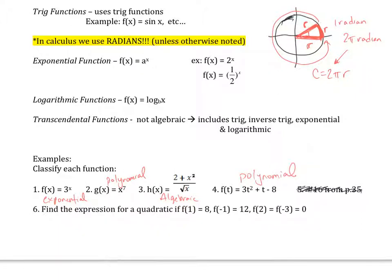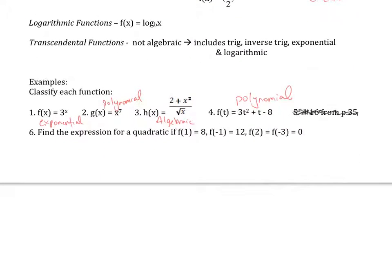All right. Find the expression for the quadratic if f of 1 equals 8, f of negative 1 equals 12, f of 2 equals f of negative 3, which equals 0. Okay, so we could tackle this a couple different ways. One way that I just heard right now from someone was, since these two, we know it's a quadratic, right here, tells us it's a quadratic. And we know f of 2 equals f of negative 3, which equals 0. So if I look at this graphically, when I put in 2 or negative 3, I get a 0 out of that. So we know that we could say y equals a times x minus 2, x plus 3. And then we can use this point, one of these two points, to solve for the a. Plug in the x and y value, solve for the a. There you go.